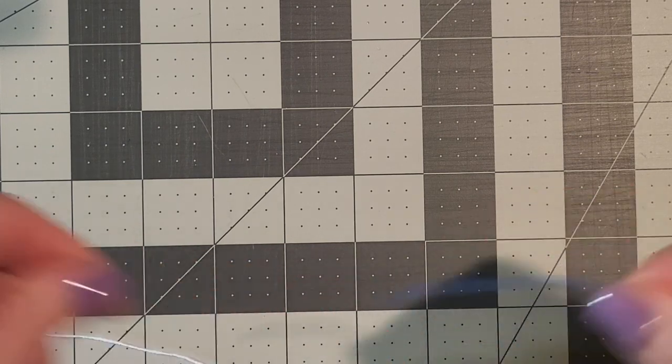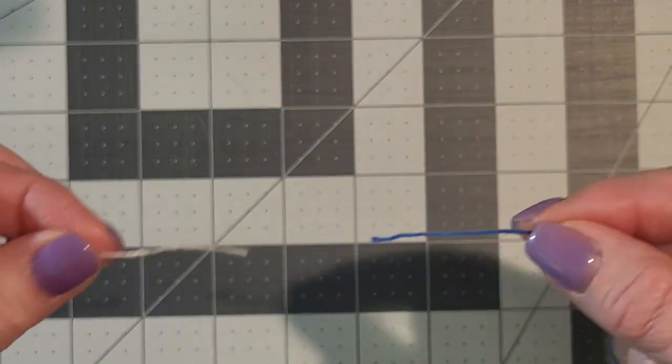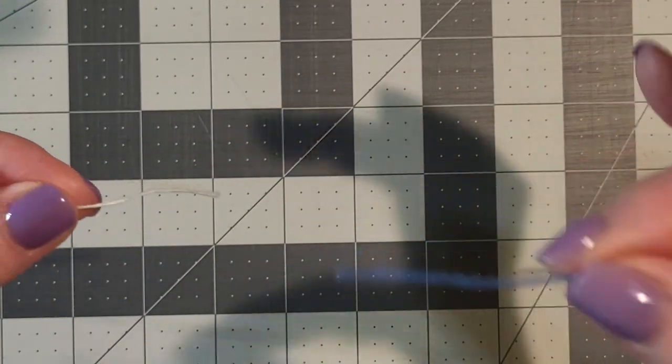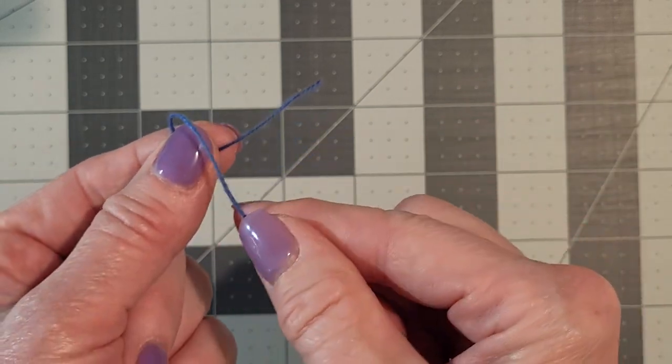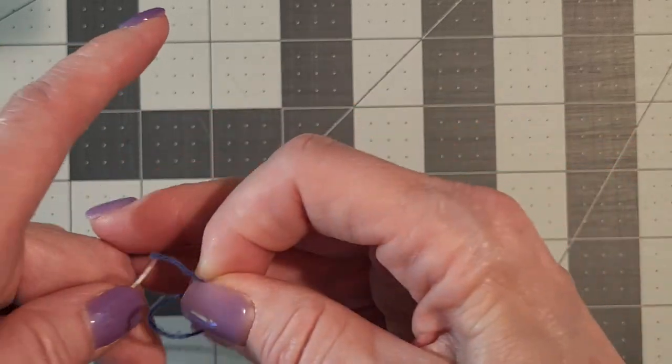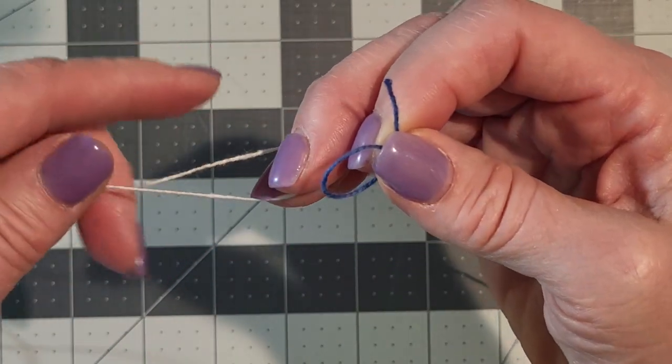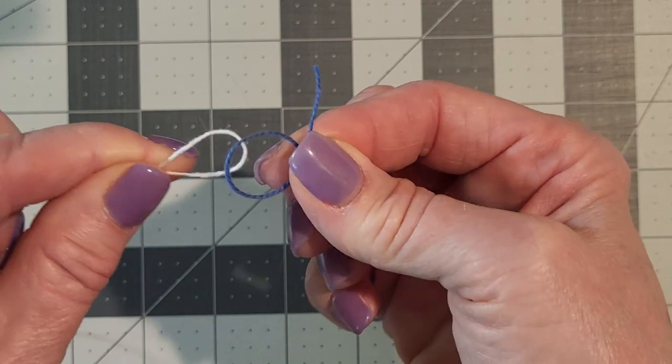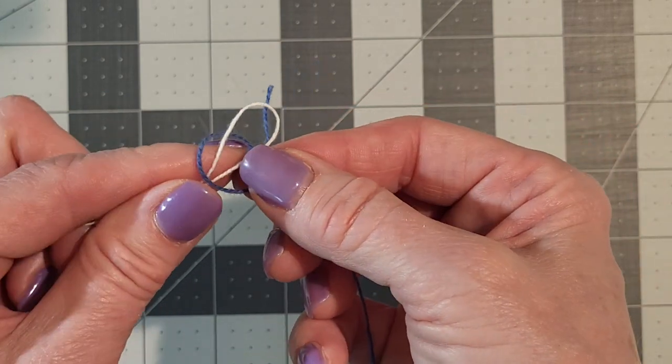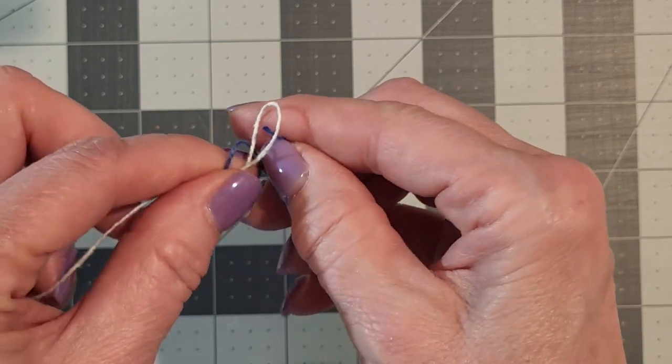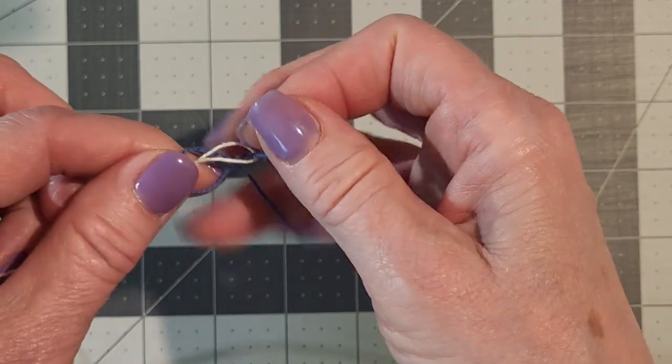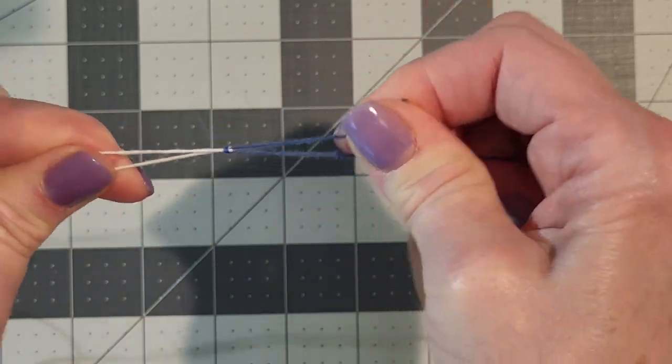Okay so let's do that again. Old warp, new warp. Loop it so the short tail is under the long tail. Loop the old warp, put it through the loop, push it through, and pull in opposite directions.